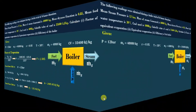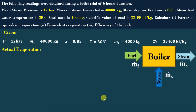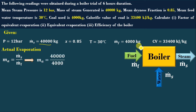Now we will discuss actual evaporation. The actual evaporation is the ratio of mass of steam generated divided by mass of fuel used, that is MS / MF. Mass of steam generated is 40,000 kg per 6 hours and fuel used is 4,000 kg per 6 hours. Substituting, the actual evaporation MA = 10 kg of steam per kg of fuel.